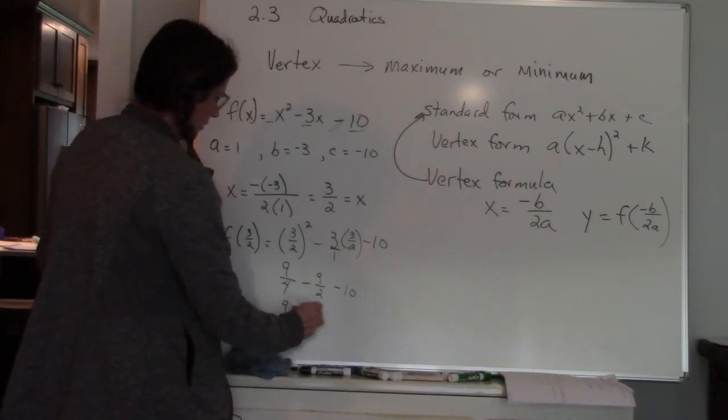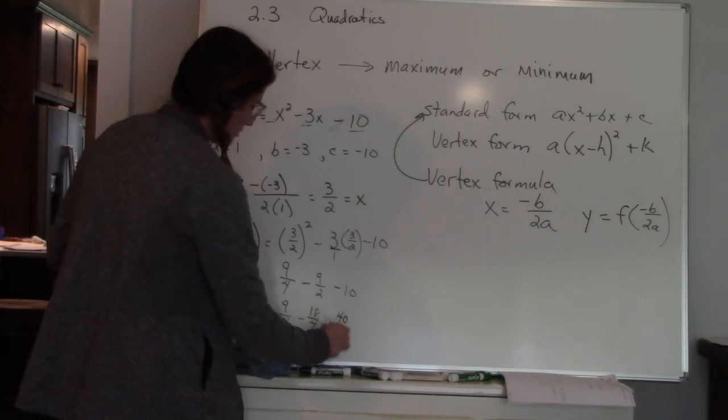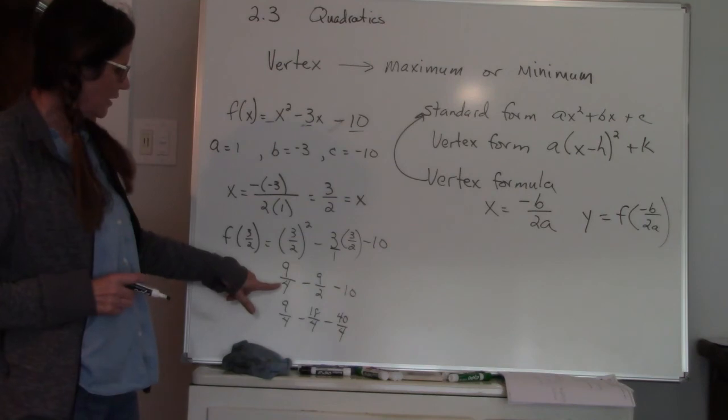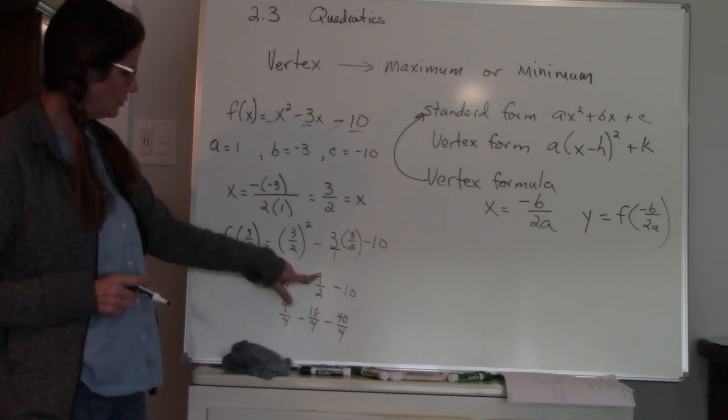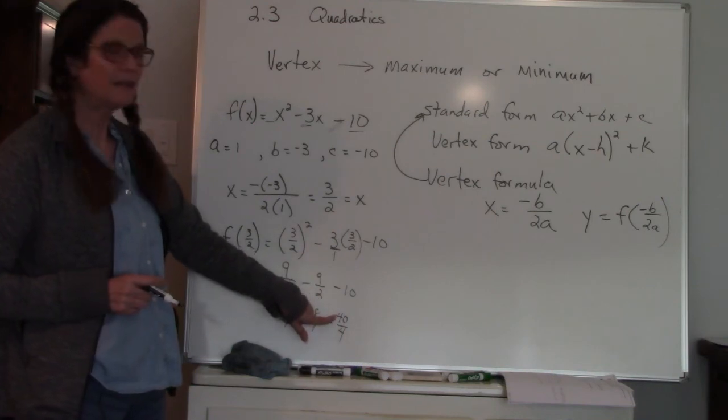have to get a common denominator. Not so bad. So my denominator is going to be four, so I have nine fourths minus eighteen fourths minus forty fourths. Each of these can be reduced back to here. Here's how I did this: I know that four is my common denominator. Two goes into four twice, so two times two is four, two times nine is eighteen. Four is my denominator. Four times negative ten is negative forty.